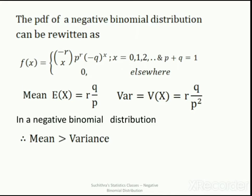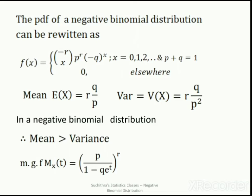From the mean and variance, we conclude that in a negative binomial distribution the mean is always greater than the variance. The moment generating function M_X(t) of a negative binomial distribution is [p / (1 − q·e^t)]^r.